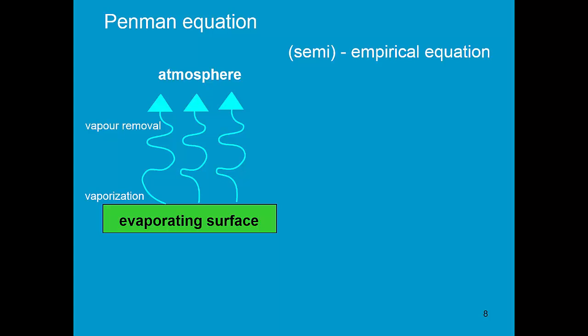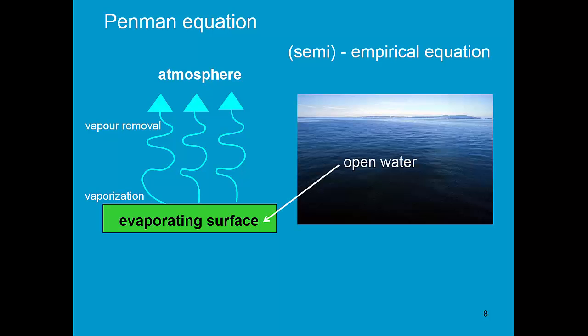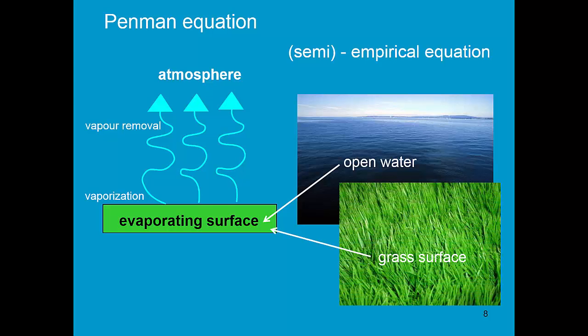However, he was not able to describe it fully, so there are some empirical parts in it, so it is a semi-empirical equation. Initially, the evaporating surface was open water. Later, he used grass as a reference surface.